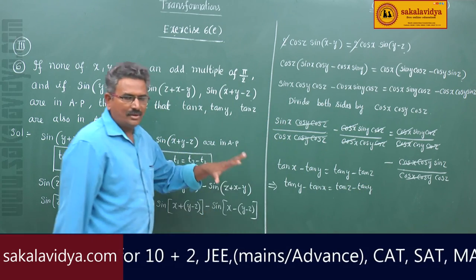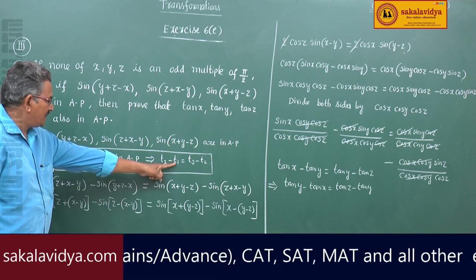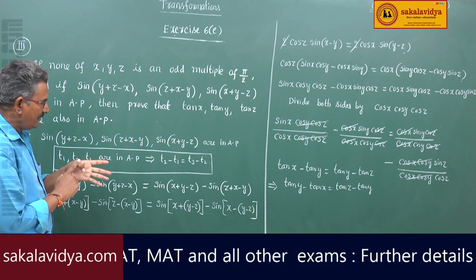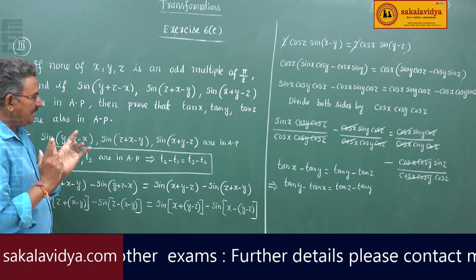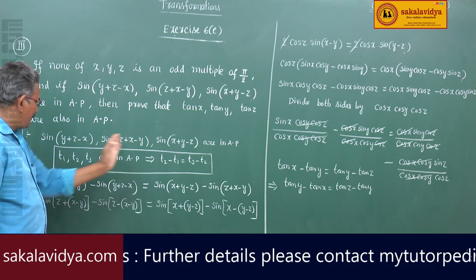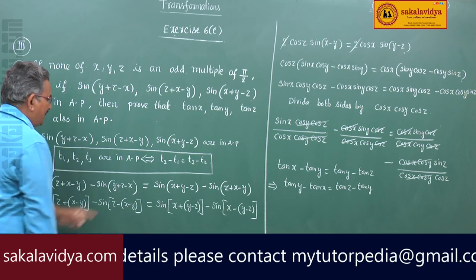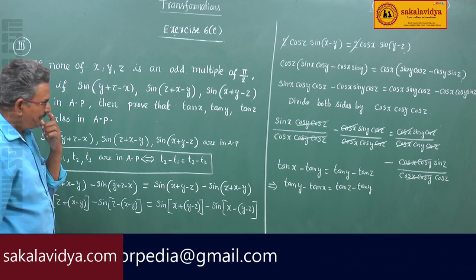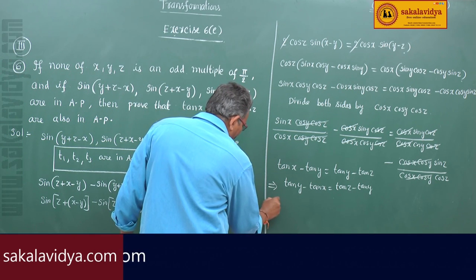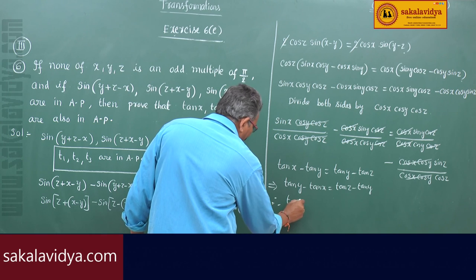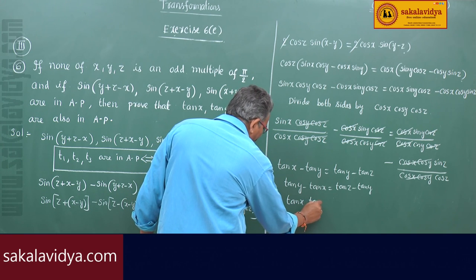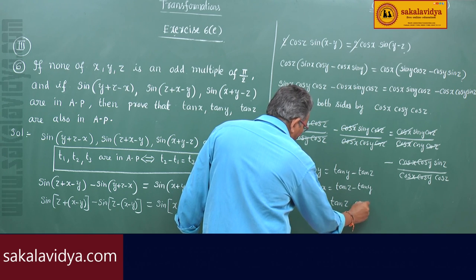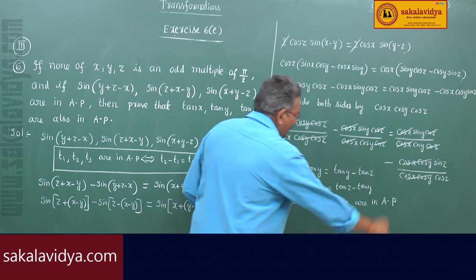Observe this step: t2 minus t1 equals t3 minus t2, where t1 is tan(x), t2 is tan(y), and t3 is tan(z). So if t2 minus t1 equals t3 minus t2, then t1, t2, t3 are in AP. Therefore, tan(x), tan(y), tan(z) are in arithmetic progression.